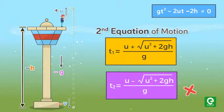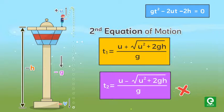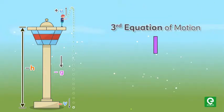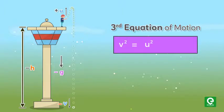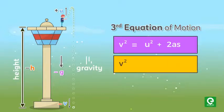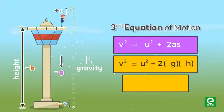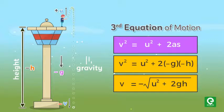For final velocity, we use third equation of motion: v square equal to u square plus 2as. Substituting the values of acceleration due to gravity and height, we get v square equal to u square plus 2 minus g into minus h. Hence v is equal to minus under root u square plus 2gh. Since the final velocity of the ball is below the origin, there will be a negative sign.